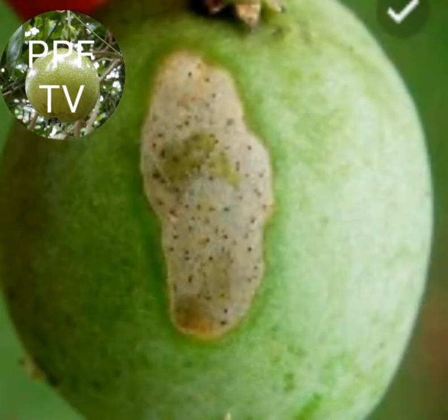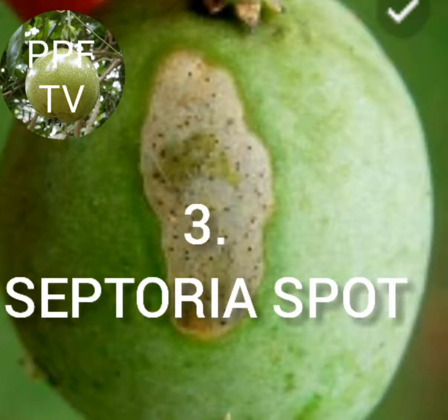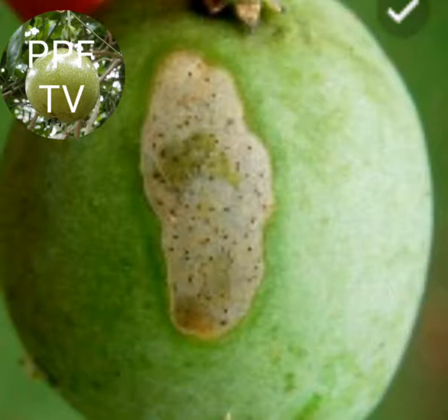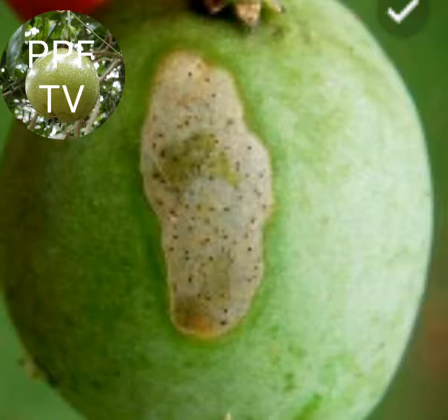Disease number three: Septoria Spot. This disease affects fruits and leaves of the passion fruit vine. It produces brown spots up to two millimeters with black dots. The disease is spread by rain, dew, and overhead irrigation. Warm, moist weather favors disease development.